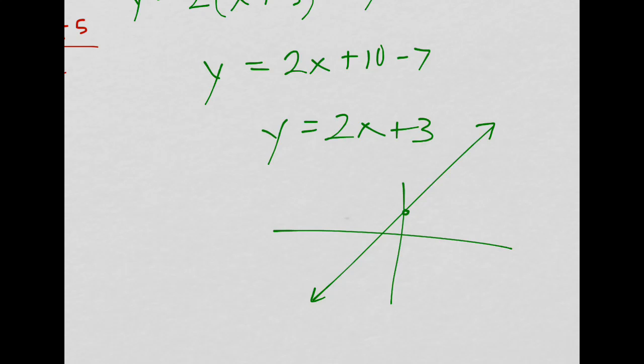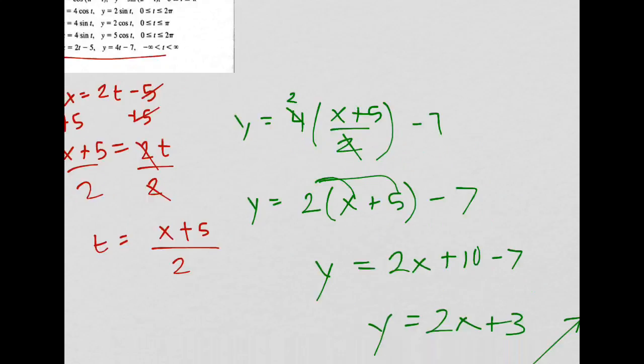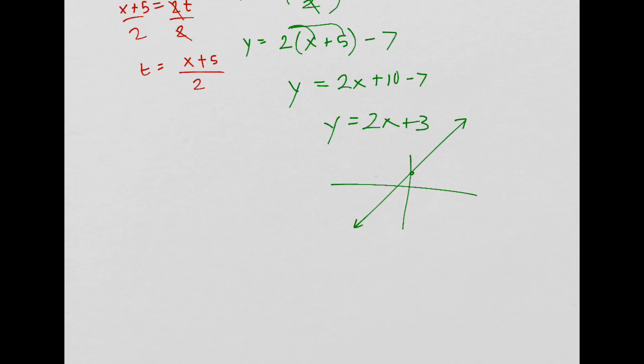So how much of the graph was graphed by this? If you remember, or you just look, it said all t values, so it was just all of the graph because that allows for all x values if you have all t values.